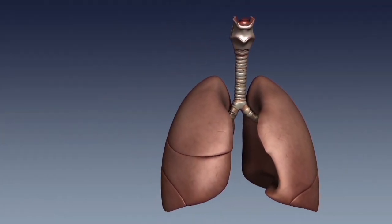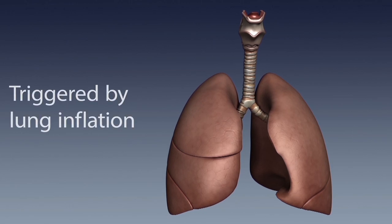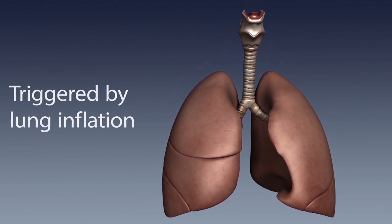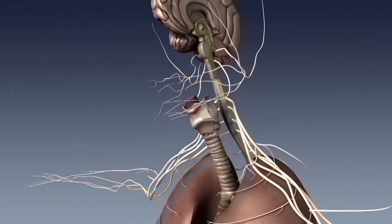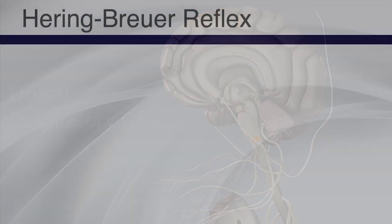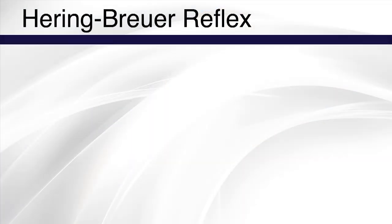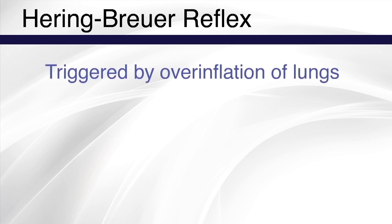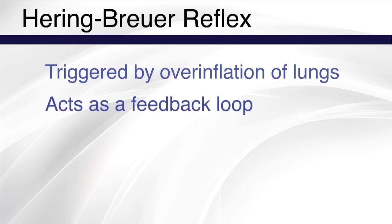The Hering-Breuer reflex is initiated as the lung inflates. Stretch receptors in the lungs transmit signals to the dorsal respiratory group to terminate inspiration, in much the same way that the pneumotaxic center does. When the lungs become overly inflated — typically a tidal volume more than 1,500 cc — the Hering-Breuer reflex acts as a feedback loop to end the cycle of inspiration.